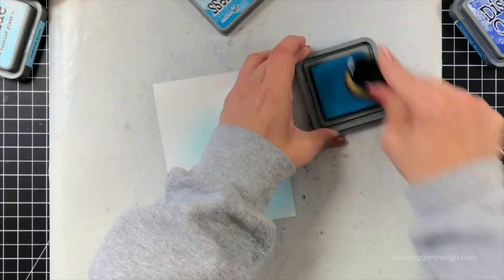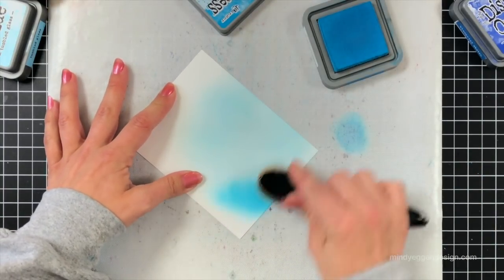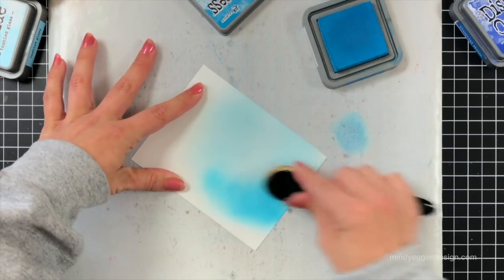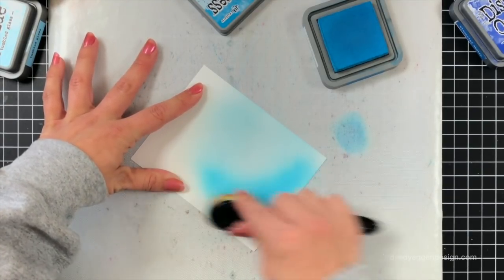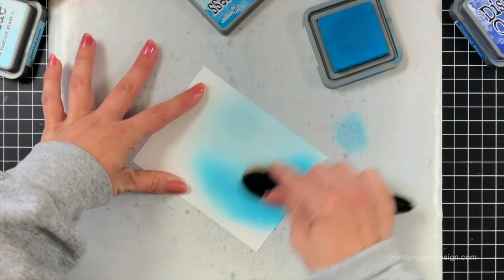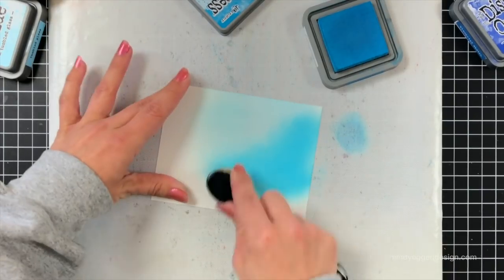Next I'm grabbing Mermaid Lagoon. Now this one is a pretty bright blue so I like to kind of swipe off onto my craft mat on the side there before I actually go to my cardstock. And I wanted an ombre look so I wanted it to go from darker to lighter and I'm going to start that in that bottom left-hand corner because that's where my flower is going to be when I die cut it.